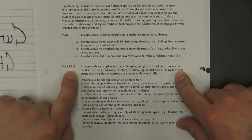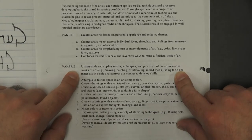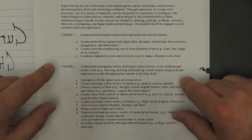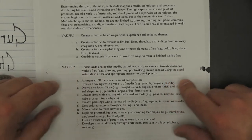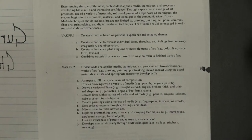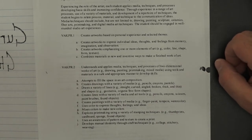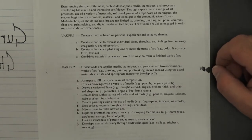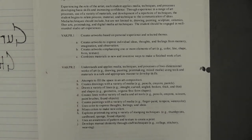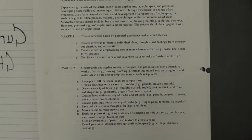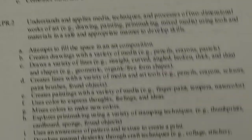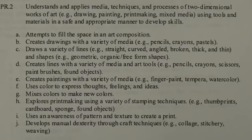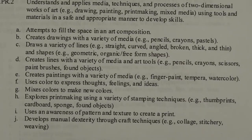Number one here: VAKPR2, which is Understanding and Applying Media Techniques and Processes of Two-Dimensional Works of Art — examples being Drawing, Painting, Printmaking, Mixed Media — Using Tools and Materials in a Safe and Appropriate Manner, and Developing Skills. From that, we've got all of these little pinpointed sub-items underneath, which is A through J.